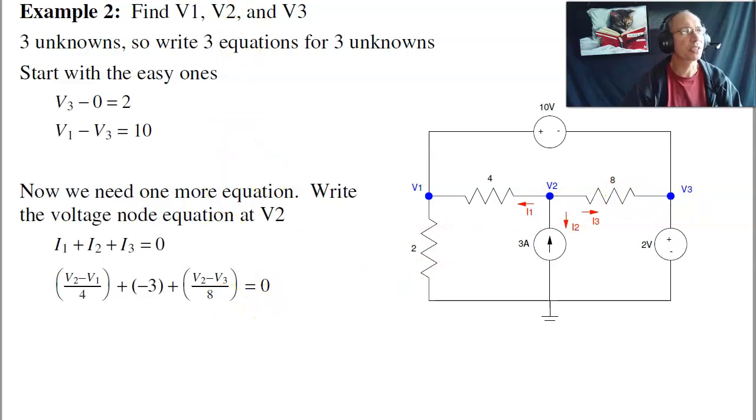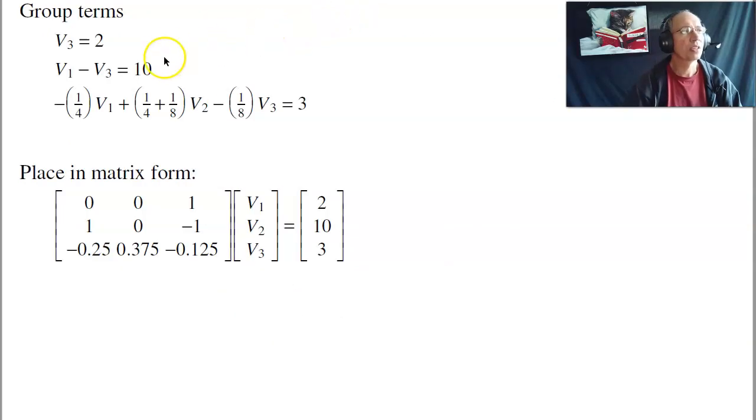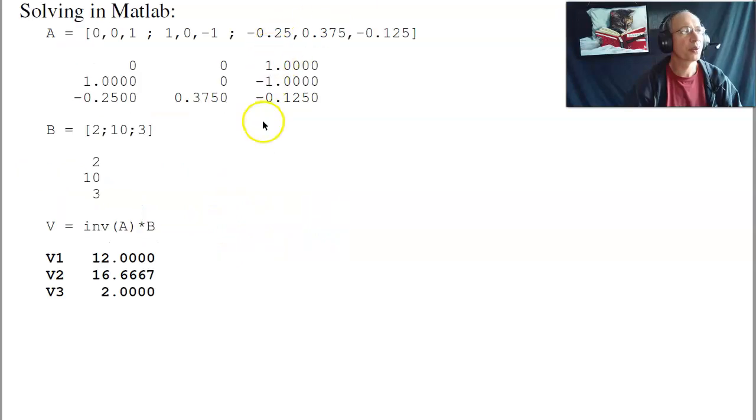Three equations, three unknowns. To solve, group the terms, put in matrix form, throw in MATLAB, and solve. Inverse of A times B.